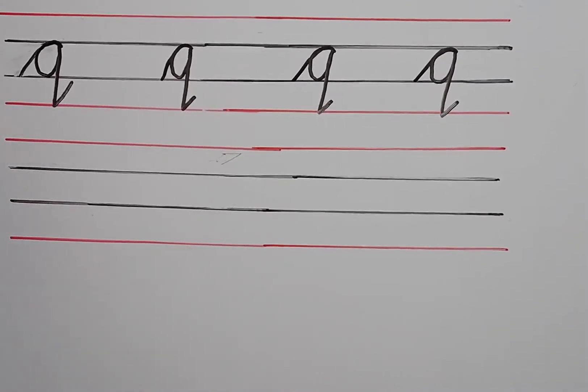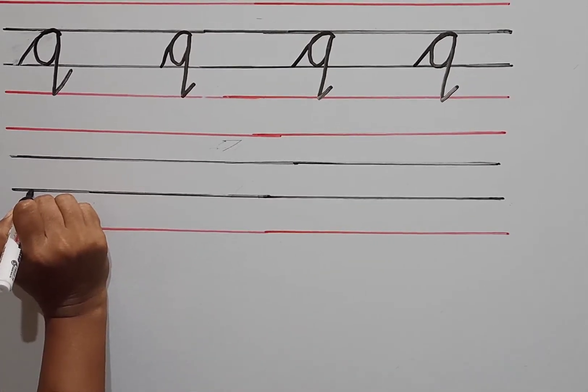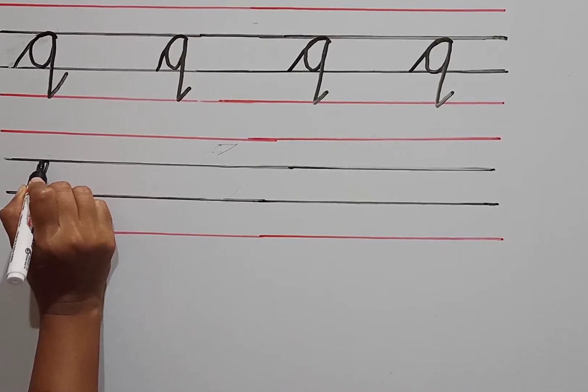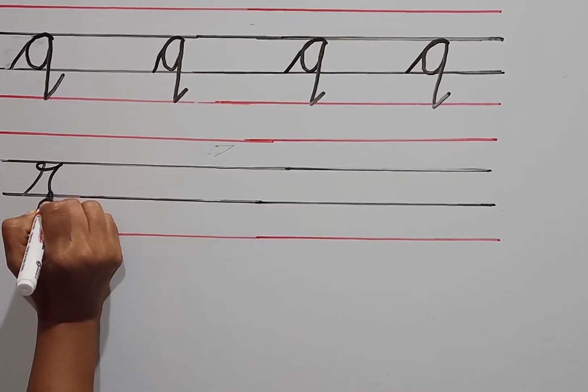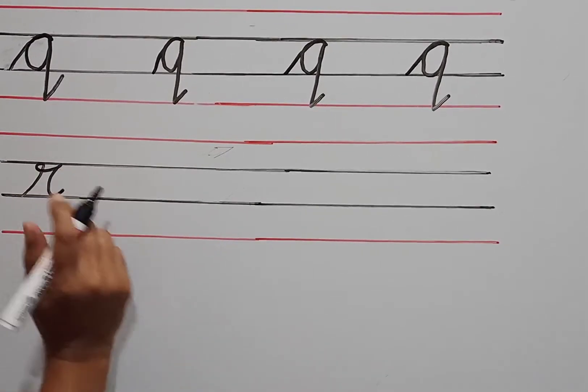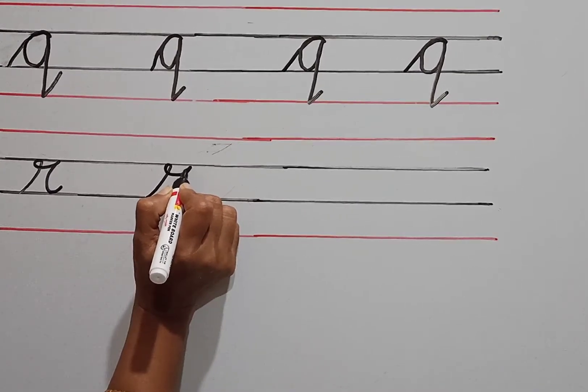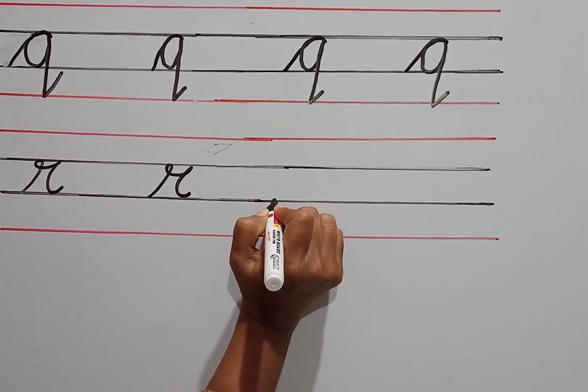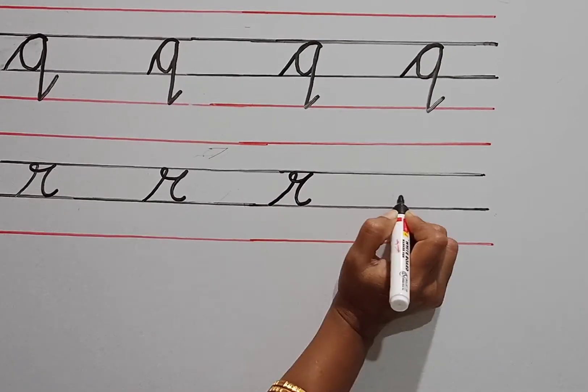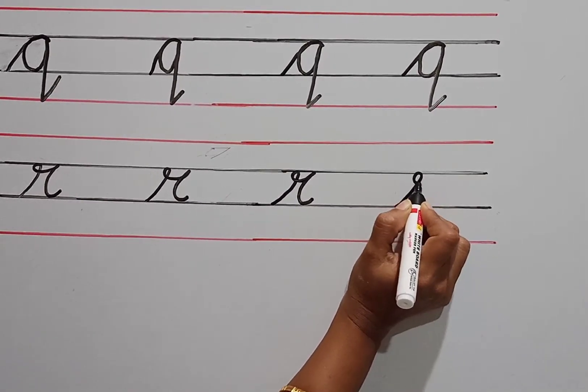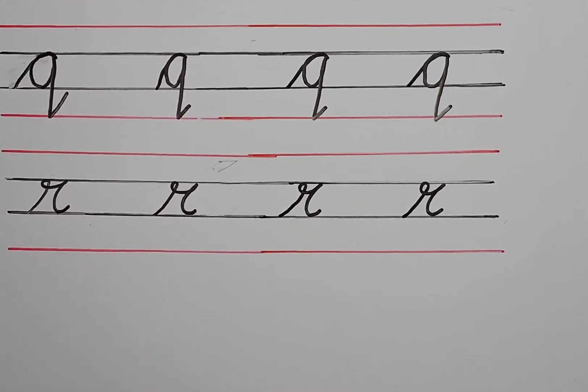Now we will write r. Again from here go up, make round, touch here, up, then after that you move like c, go again, turn back. This is your small r, r for rose, r for rose. This is your r, now we will write in the notebook.